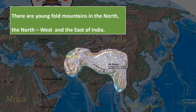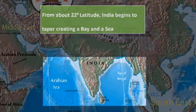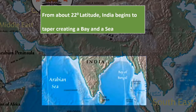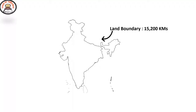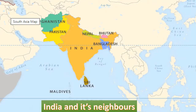There are young fold mountains in the north, the northwest, and the east of India. From about 22 degrees latitude, India begins to taper, creating a bay and a sea. India has a land boundary of 15,200 kilometers; including island groups, the length of India's coastline is 7,516.6 kilometers. Our neighbors: Pakistan and Afghanistan lie to the northwest, Nepal, China, and Bhutan to the north, Myanmar and Bangladesh to the east, and Sri Lanka and Maldives are our island neighbors in the Indian Ocean to the south.